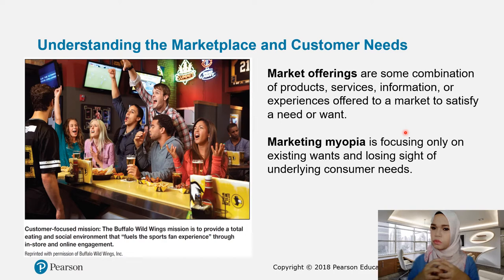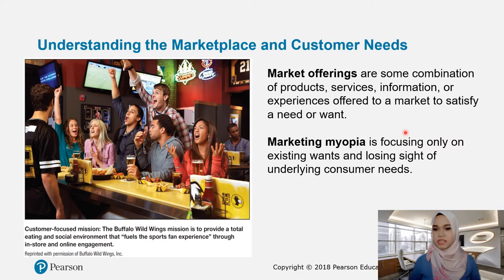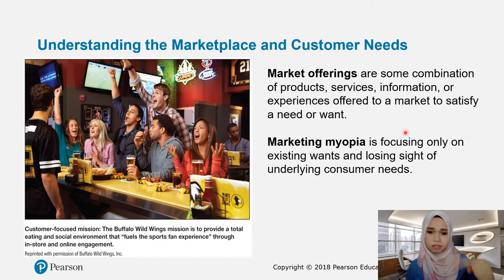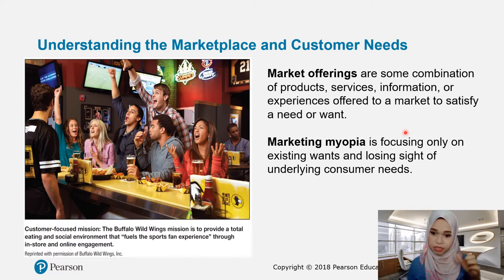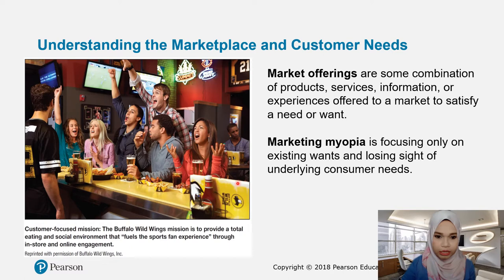Nowadays we don't do marketing myopia because we as marketers and organizations want to see what else customers would like to have, what are the needs of the customer. A very good example is when you go to Amazon.com — this is a way Amazon can actually suggest what products you would need. In Shopee also, you'll be able to see products that are actually recommended for you. That kind of recommendation is actually putting the needs of customers beyond what customers actually demand, meaning they can predict what you need. That is actually a customer-focus mission.